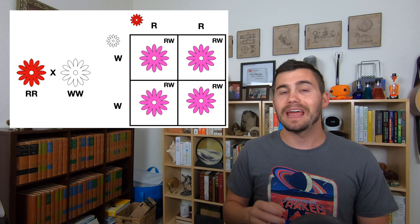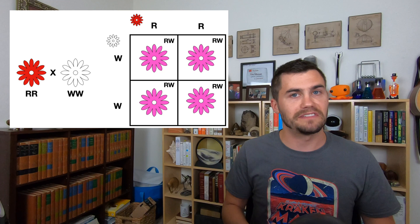Their phenotype will be pink. A brand new phenotype, unlike either of the parents, is produced because neither allele is dominant over the other.